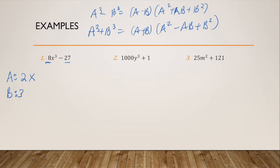So this factors perfectly into A minus B, so 2X minus three times A², which is 4X², plus A times B, which is 6X plus B², which is nine.